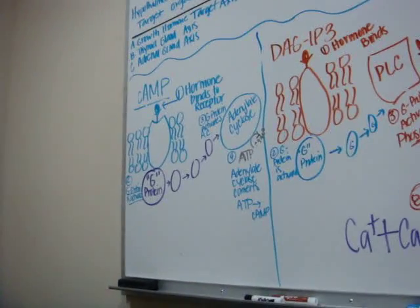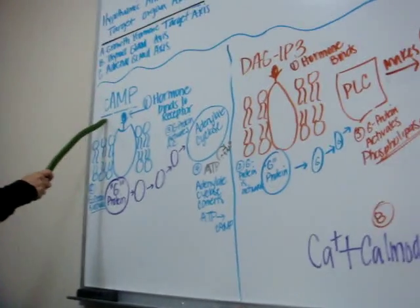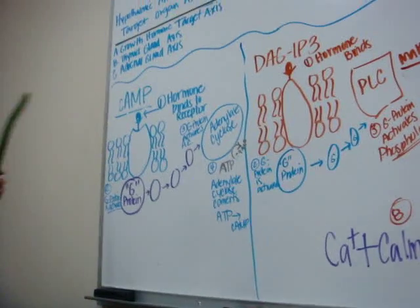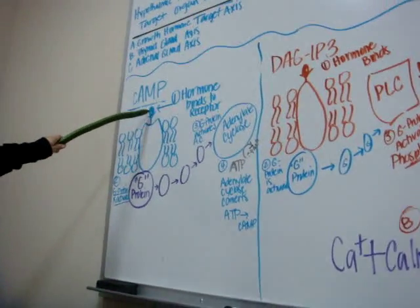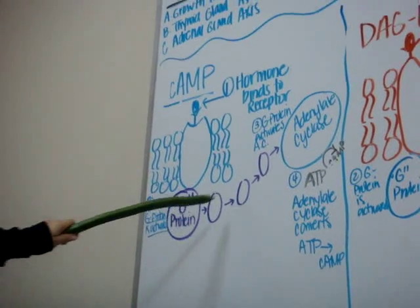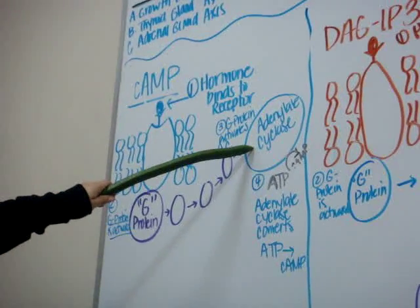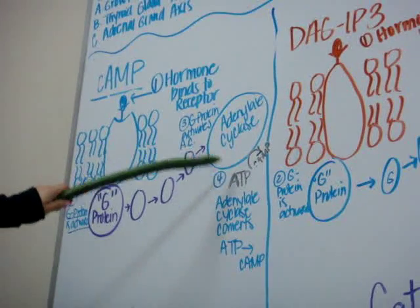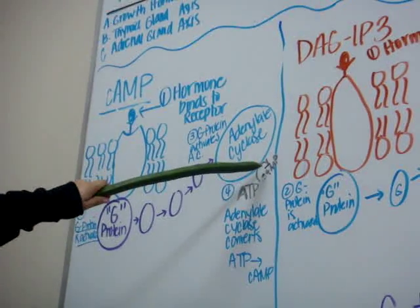I'm going to be talking about CAMP. Once the hormone binds to the receptor, that activates G-protein. From there, G-protein activates adenylate cyclase, which converts ATP into CAMP.